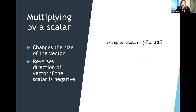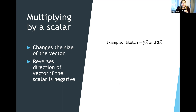A negative scalar reverses the direction of your vector — it flips it 180 degrees. A scalar can change the size of your vector. The special case is the scalar number one: multiplying by one gives you your vector back. Multiplying by two doubles the size of your vector. So a scalar will change the length, and if negative, it flips direction 180 degrees. Let's do an example.